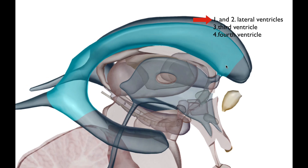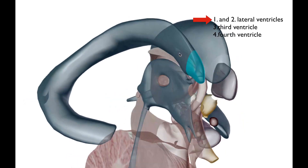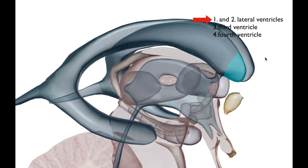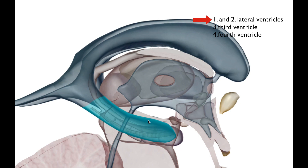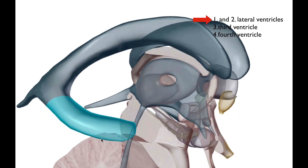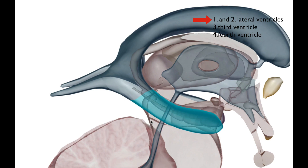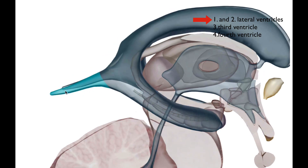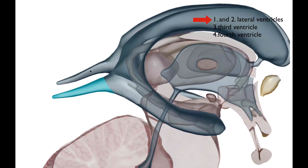The lateral ventricle has multiple parts to it. The central part extends into the frontal lobe — this is called the frontal horn or the anterior horn. In the parietal region you have the central portion, and just below it on the temporal side, inside the temporal lobe, you have the inferior horn, sometimes also called the temporal horn. Most textbooks will use the term inferior horn. On the most posterior aspect you have the posterior horn, which goes into the occipital lobe and is also called the occipital horn.